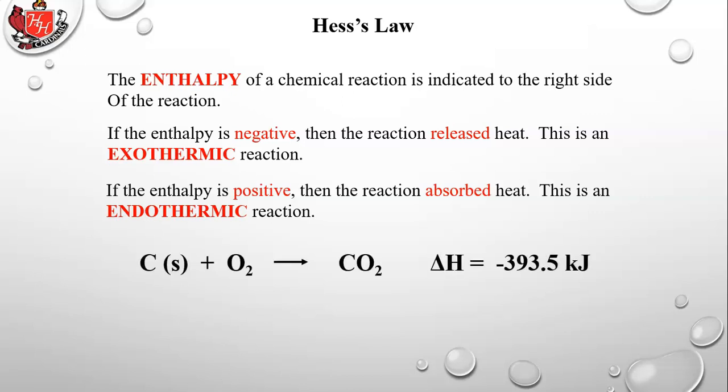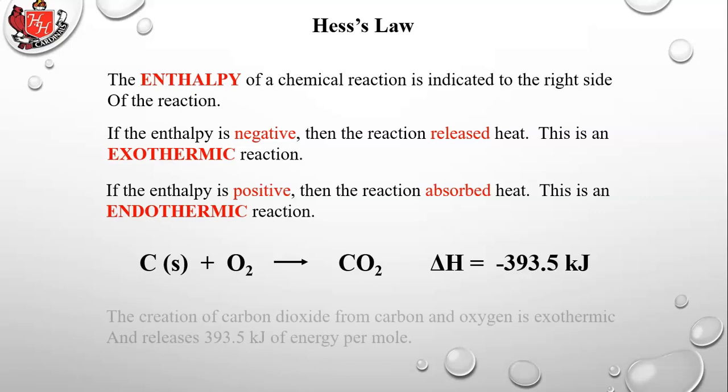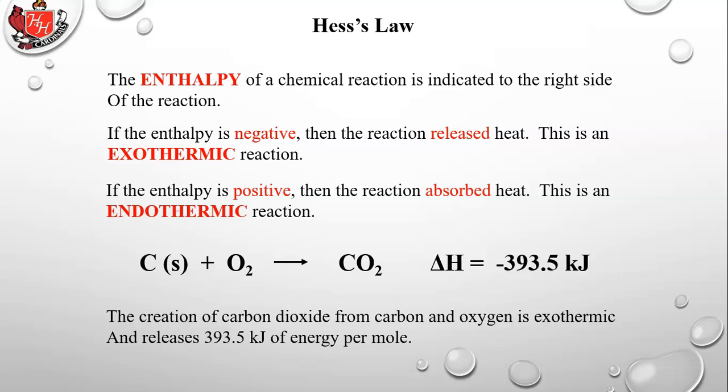If we look at this reaction — carbon plus oxygen produces carbon dioxide — you write the delta H, or the enthalpy of the reaction, off to the right. In this case, the delta H is negative 393.5 kilojoules. That means the creation of carbon dioxide from carbon and oxygen is exothermic and releases 393.5 kilojoules of energy per mole.